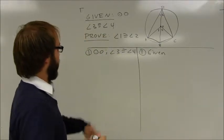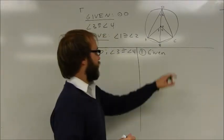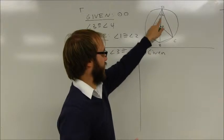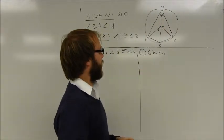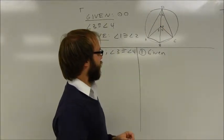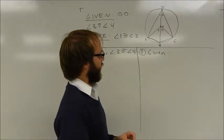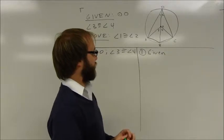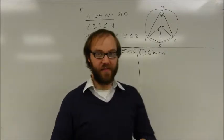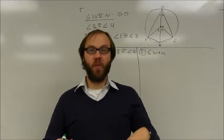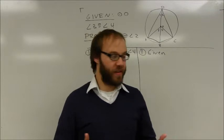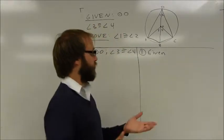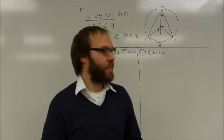So in this case, if I can prove these two top little triangles congruent, I can prove angle 1 is congruent to angle 2. However, it's very possible that I don't have enough information to do that. So one possibility of this proof is just to prove whatever triangle is congruent that I can.